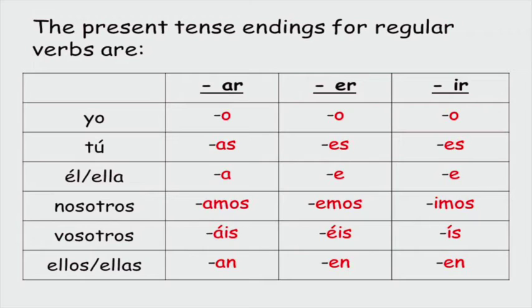The next one you speak is COMES, C-O-M-E-S. And underline ES. He or she eats is COME, C-O-M-E, and underline E. We eat is COMEMOS, C-O-M-E-M-O-S, and underline EMOS. Ye eat is COMÉIS, C-O-M, E accent, I-S. They eat is COMEN, C-O-M-E-N.